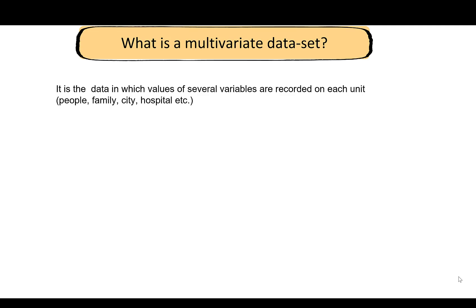This unit can be a person, so you may record several variables such as a person's height, age, income, education, blood pressure, and so on. Or that unit could be a family — for example, the average income of the family, the number of people in that family, or the average monthly expenditure of that family.